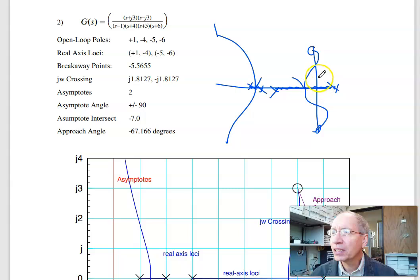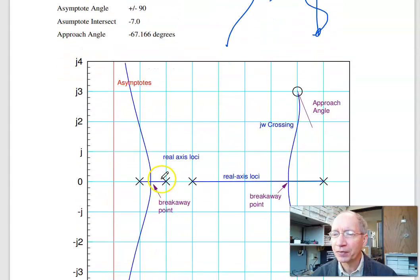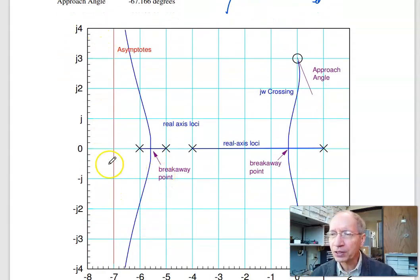J-omega crossing is search the j-omega axis to see where the angle is at 180, and it turns out they actually do add up to 180 right here. I have four poles, two zeros, meaning two extra poles, two asymptotes at plus minus 90 degrees. The asymptote intersects at minus 7. So there's the asymptote.